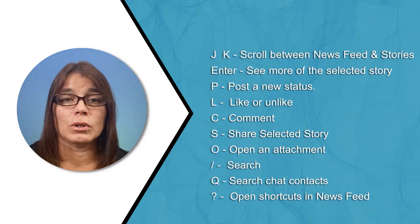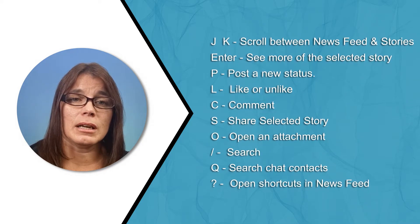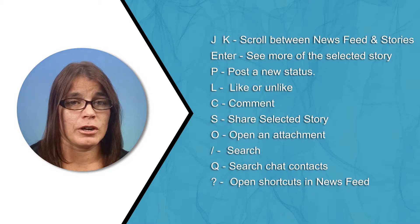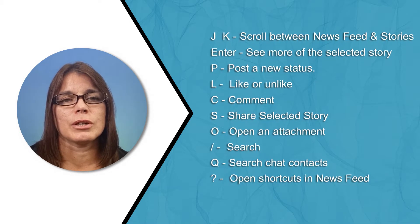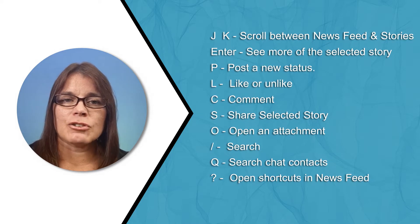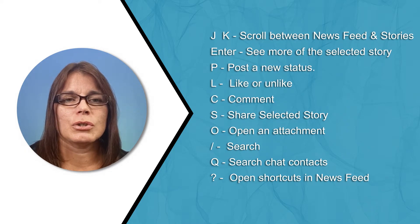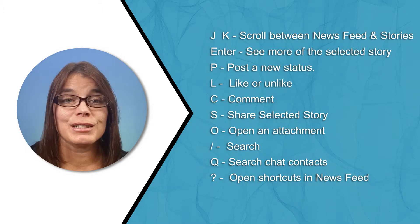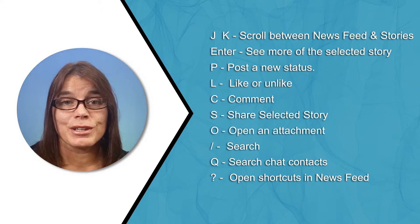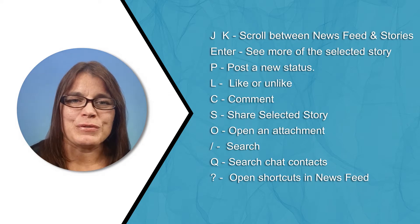L is to like or unlike a selected story. C is for commenting. S is for share. O is to open an attachment from a selected story. The backslash gives you search. Q gives you search chat contacts. And the question mark opens up this very list of keyboard shortcuts so you can remember them — but only while you're in your news feed.